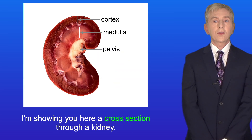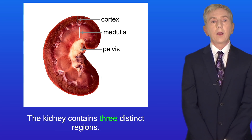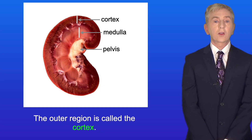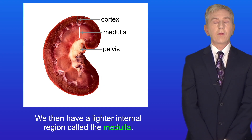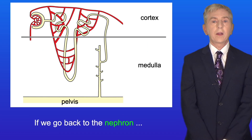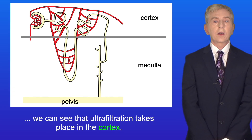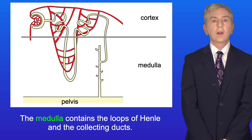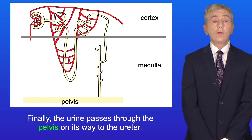Here is a cross-section through a kidney. The kidney contains three distinct regions: the outer region is called the cortex; we then have a lighter internal region called the medulla; and finally a central region called the pelvis. Going back to the nephron, we can see that ultrafiltration takes place in the cortex. The medulla contains the loops of Henle and the collecting ducts. Finally, the urine passes through the pelvis on its way to the ureter.